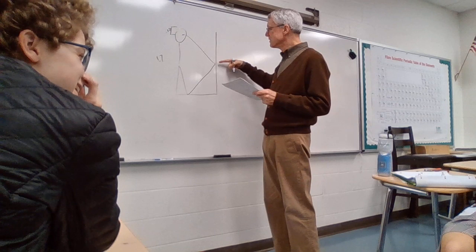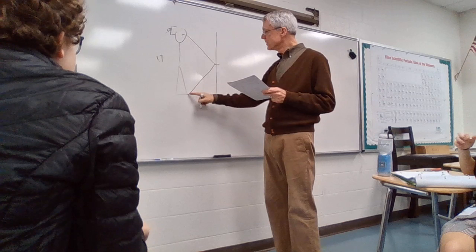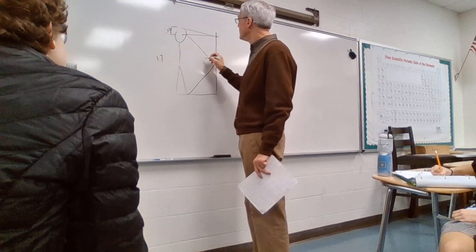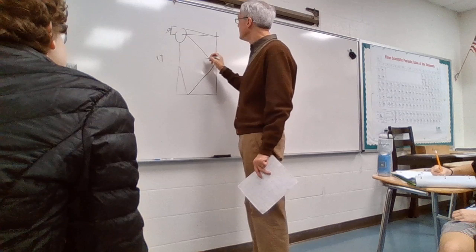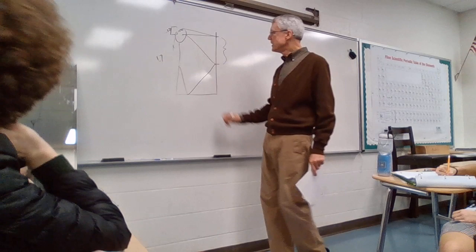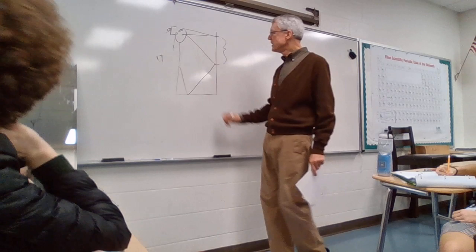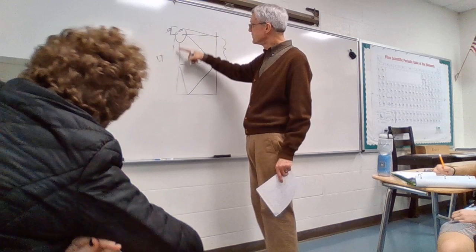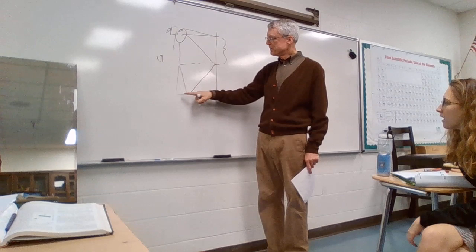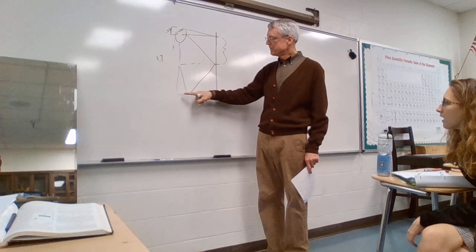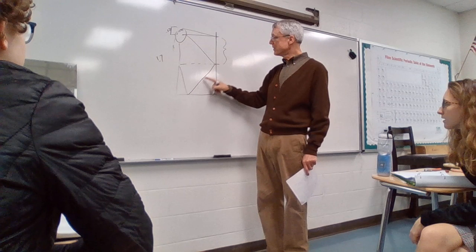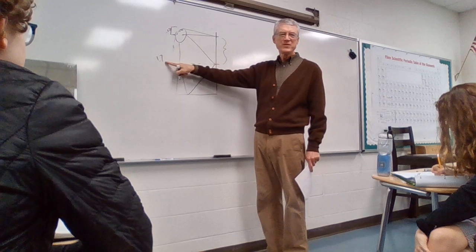For part A, the height of the mirror — the bottom of it has to be there for her to see her feet, and the top has to be there for her to see the top of her head. The triangles formed are identical, so the ray hits the midpoint. The distance from the bottom of her feet to her eye is 1.7 meters, so from the mirror bottom to eye level is half of 1.7.